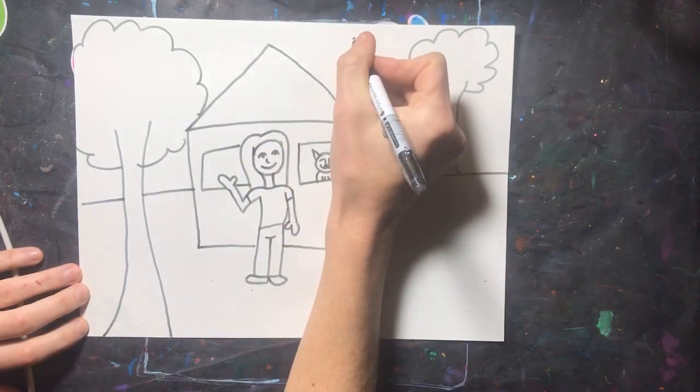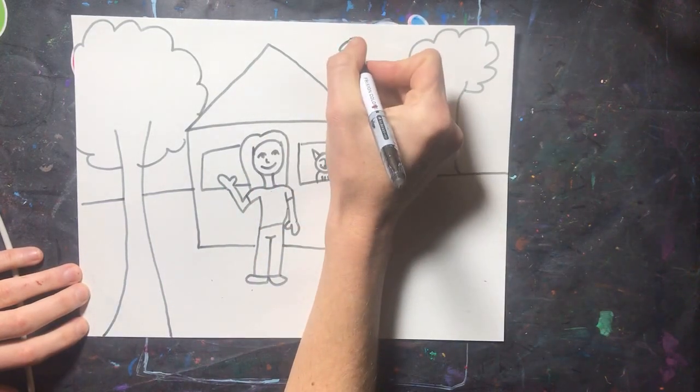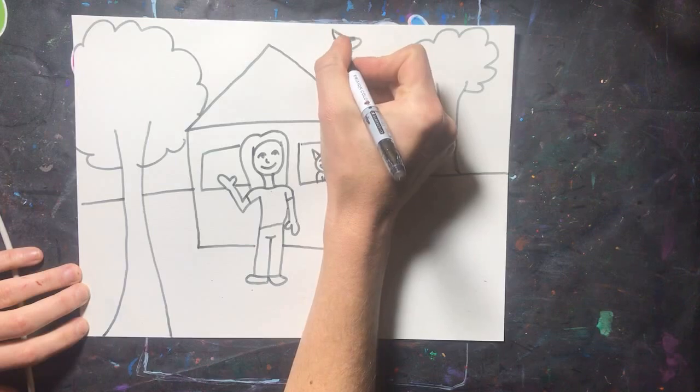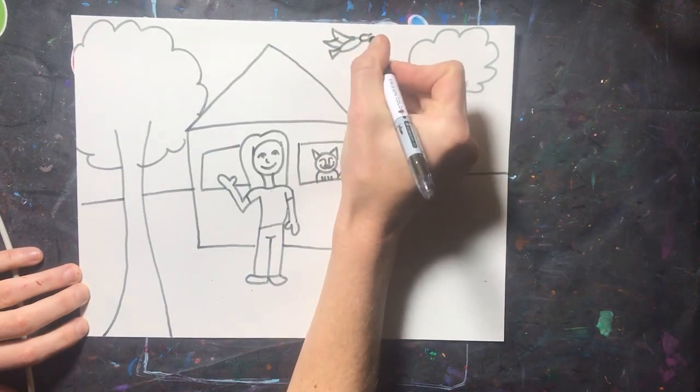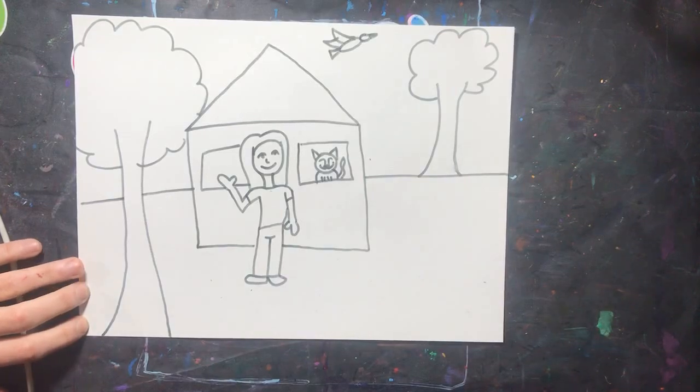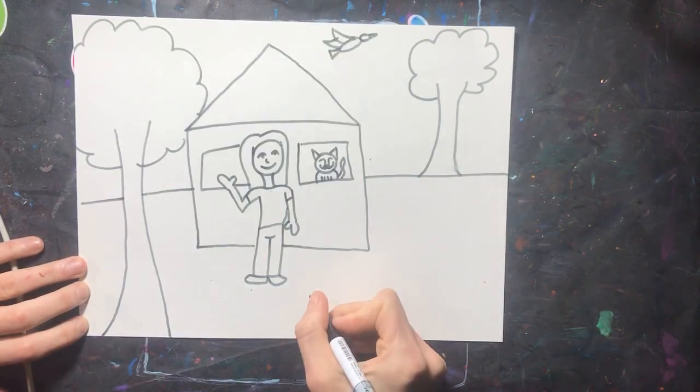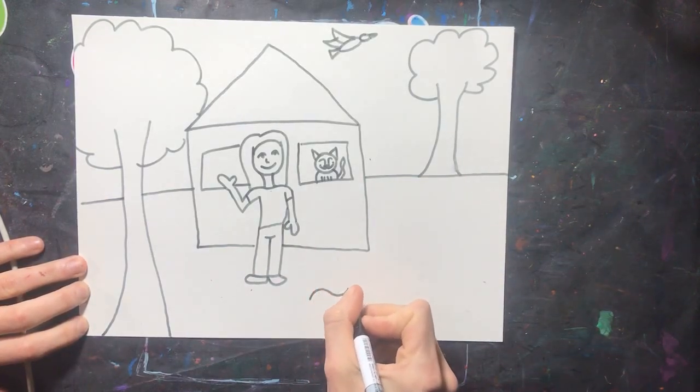Now we're going to draw something above our house and something below it. You can draw anything that you want above your house. Think about things that you might see in the sky: birds, planes, clouds, suns, moons, stars, bugs, things like that.